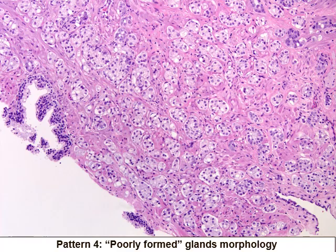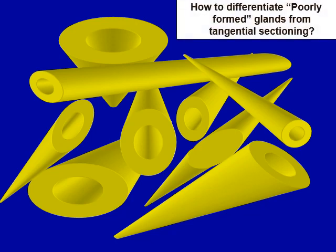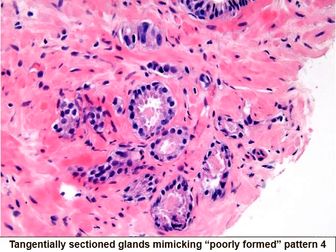However, this definition suffers from definitional ambiguity — it was not clarified how to differentiate poorly formed glands from tangential sectioning. When cancer glands are cut, invariably some glands will have a poorly formed architecture as shown in this cartoon. Keep in mind that when you have few or random seemingly poorly formed glands, you cannot exclude tangential sectioning and this type of example should still be graded as pattern three.